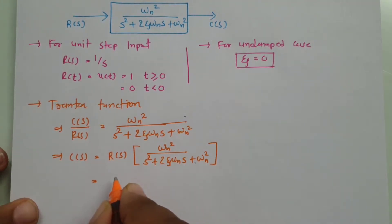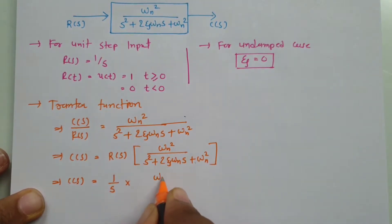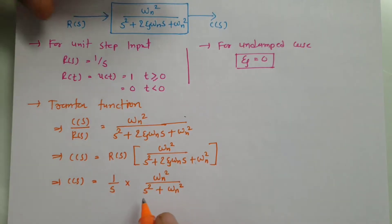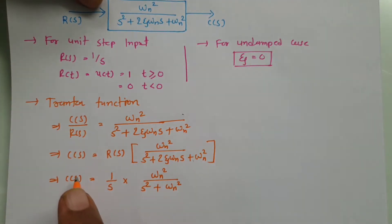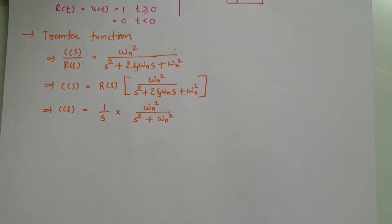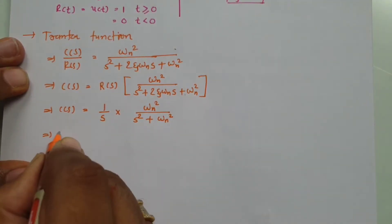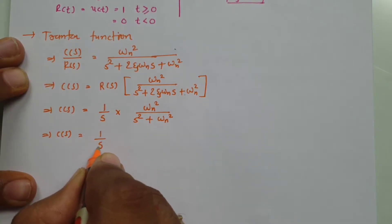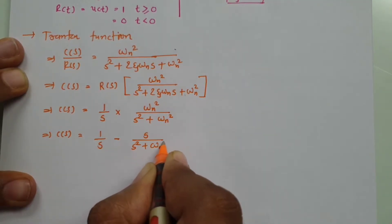Now I place the unit step input, so R(s) equals 1 by s, with zeta equals 0. That gives C(s) equals omega_n squared divided by s times (s squared plus omega_n squared), since the 2 zeta omega_n s term becomes zero. We want this output in terms of the time domain, and we can directly write this as 1 by s minus s divided by (s squared plus omega_n squared).